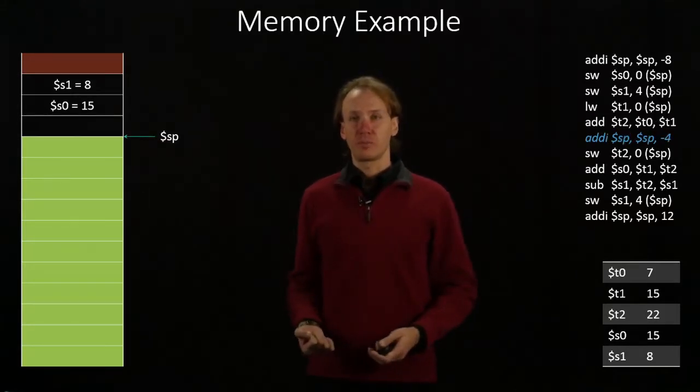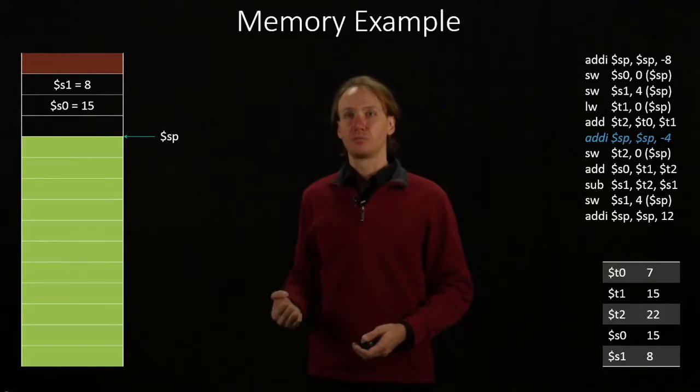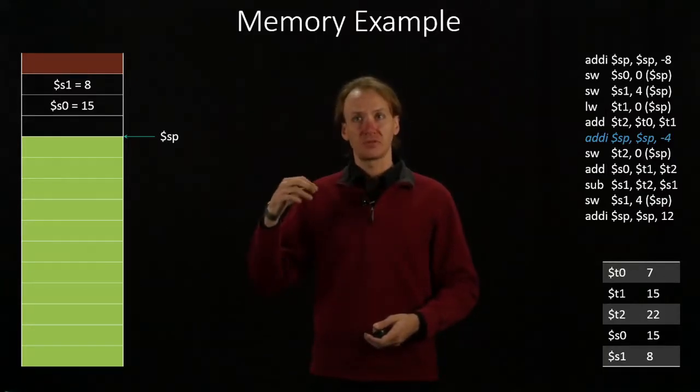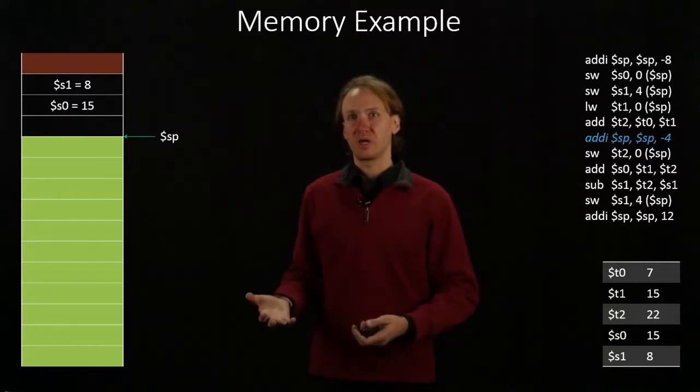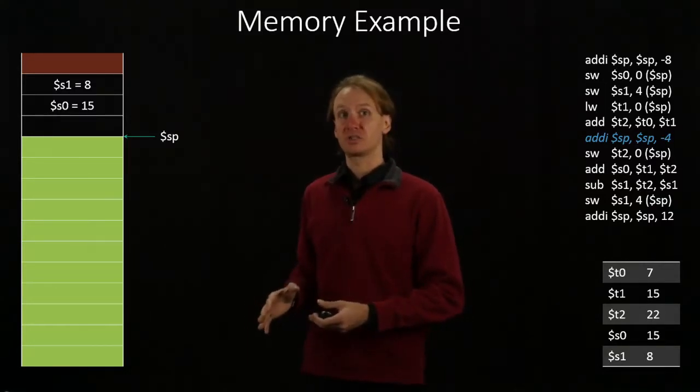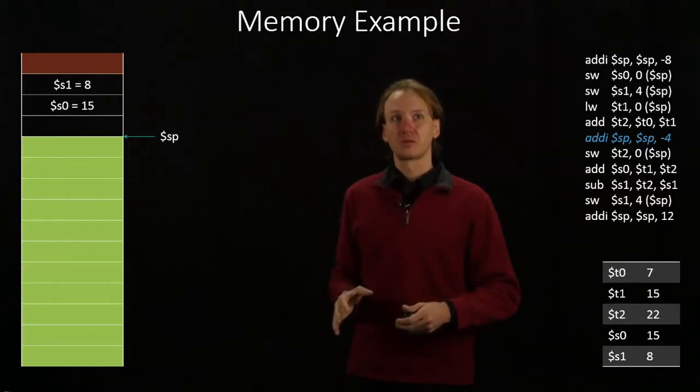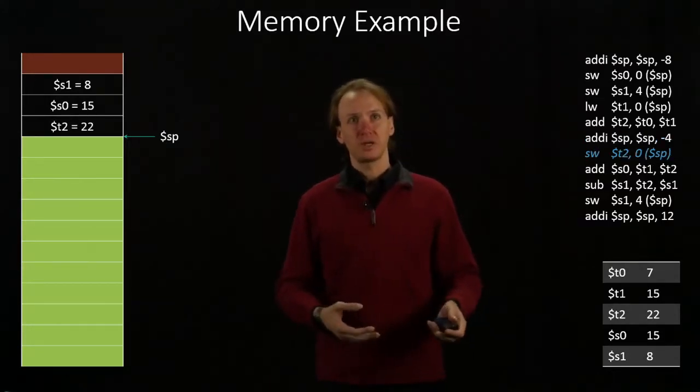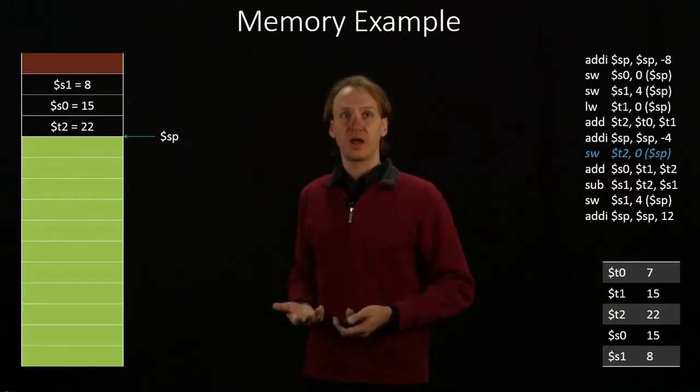Now I'm going to allocate another 4 bytes of space on my stack. So you can see my stack pointer moved down. I've got more memory allocated for me, but this hasn't affected anything that I'd already put on the stack. But now I can store something in there, so I'm copying T2 into that newly allocated region.